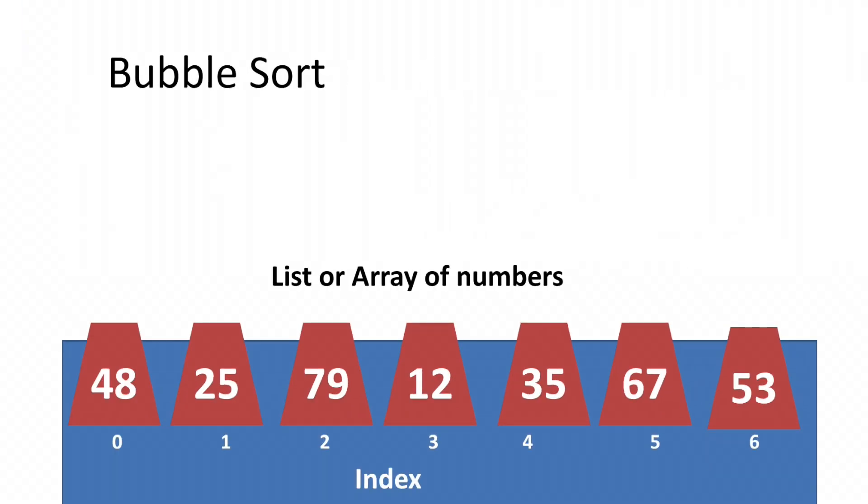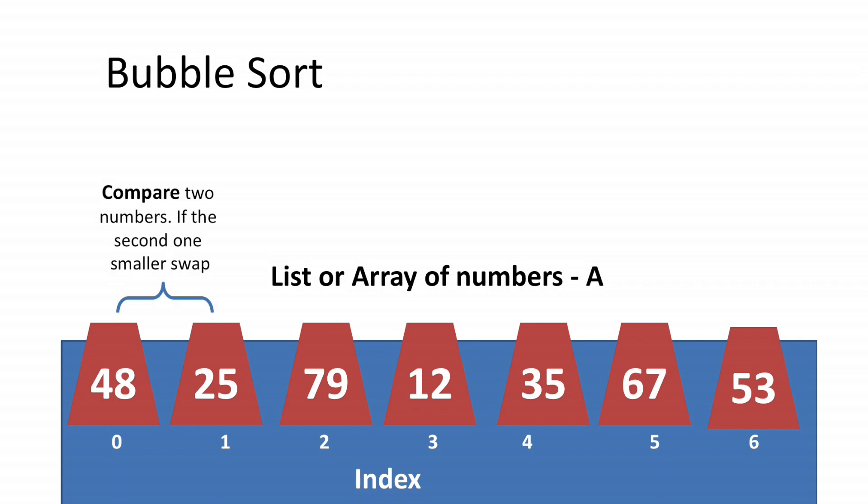We've got a list of numbers over here. The first thing you do is compare the first two numbers, and if the second number is smaller, then you're going to swap because it's ascending order. We want to sort this list from smaller to bigger.